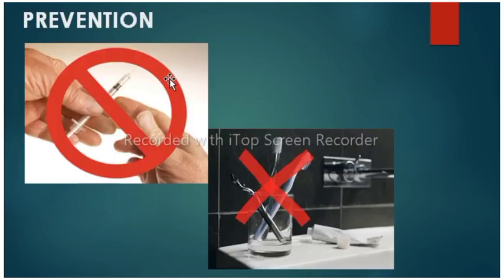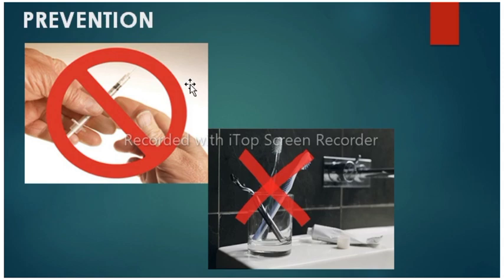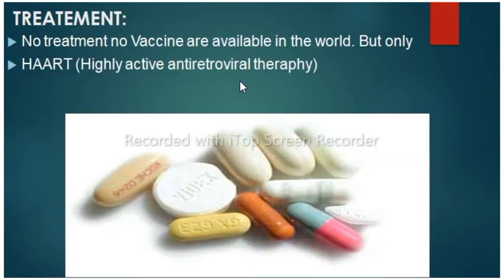Prevention of HIV: use a condom every time during sex. If you inject drugs, don't share needles or syringes. Don't share razors, toothbrushes, or other items that may have blood on them. Take anti-HIV medication as directed by your healthcare provider. If you are a mother infected with HIV, don't breastfeed your baby. There is no cure or vaccine available, but HAART — highly active antiretroviral therapy — suppresses viral replication, allowing the individual's immune system to recover, strengthen, and regain function.